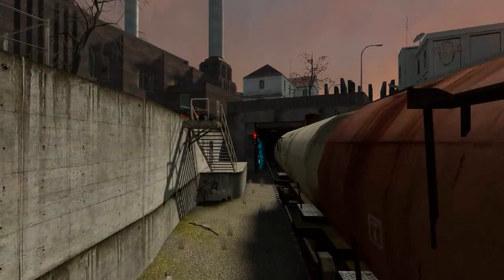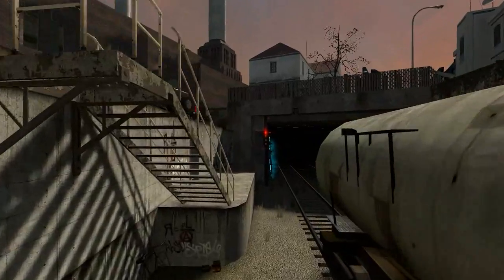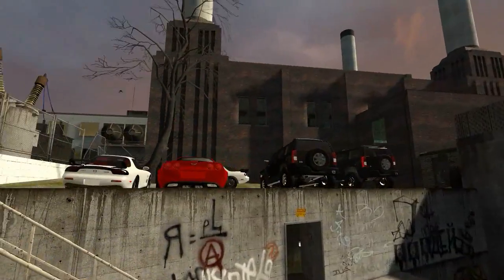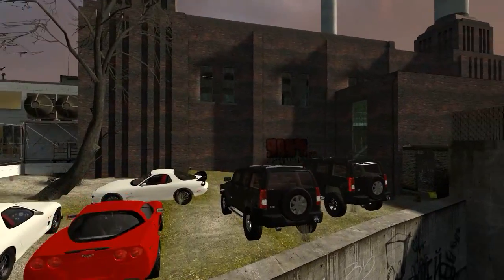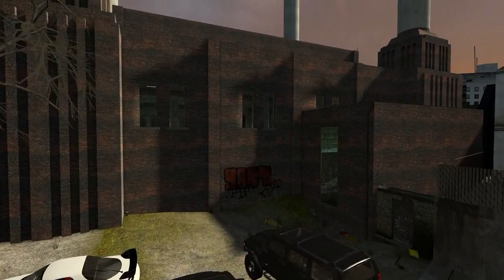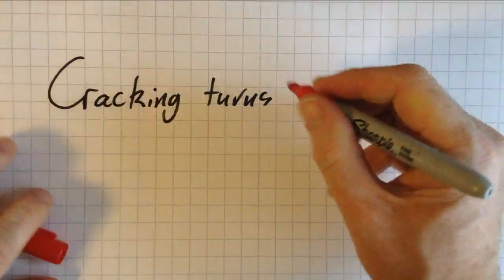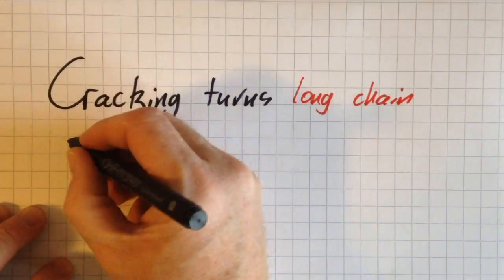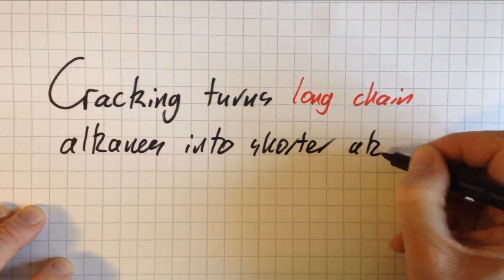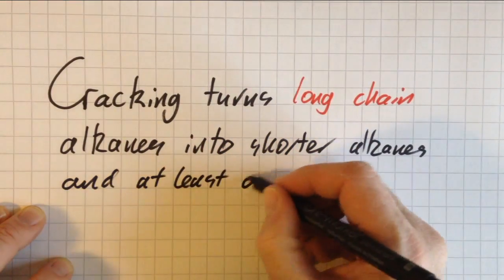Long chain alkanes, such as those being transported by train to the power station to be combusted, have a lower value than shorter or branched alkanes used in gasoline for cars. So how can I turn the long chains into short chains? Well, cracking turns the long chains of low value into alkanes with shorter chains with a higher value and at least one alkene.